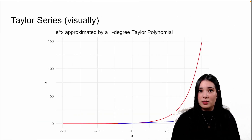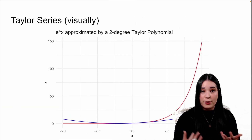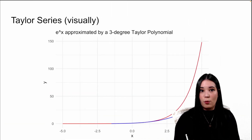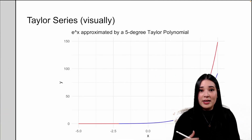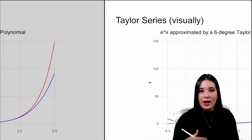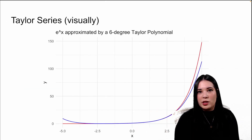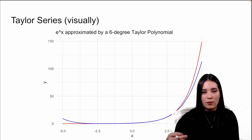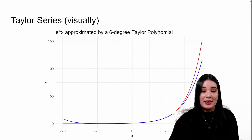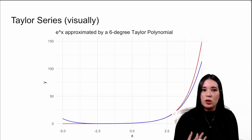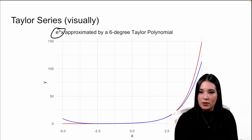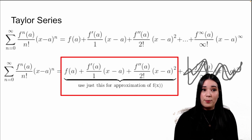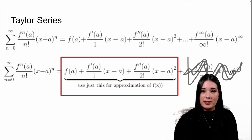But when we add our second part, it's getting a little bit closer. And we add a third part, even better; fourth, even better; fifth, even better; sixth, even better; and seventh, even better. You can see that as we take all of the values in this infinite sum, we're getting closer and closer to our function e to the x that we're trying to approximate. Mathematically, you can write out a Taylor series like this as an infinite sum.